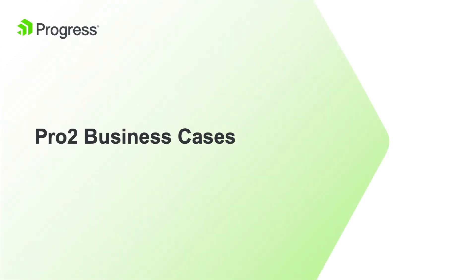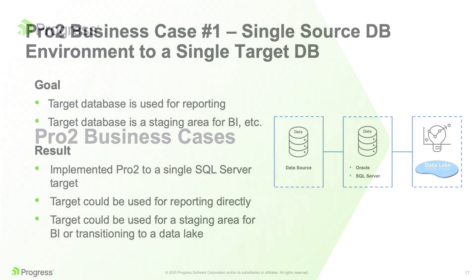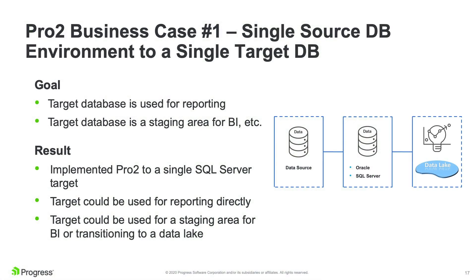Let me talk about some of the use cases. The most common case is a single source database or set of source databases for an application pushing data to a single target database. From there, data can go to a data lake or wherever needed. In this example, the middle database is a staging database that a data lake pulls from, or you can report directly against that middle database, which is also very common.